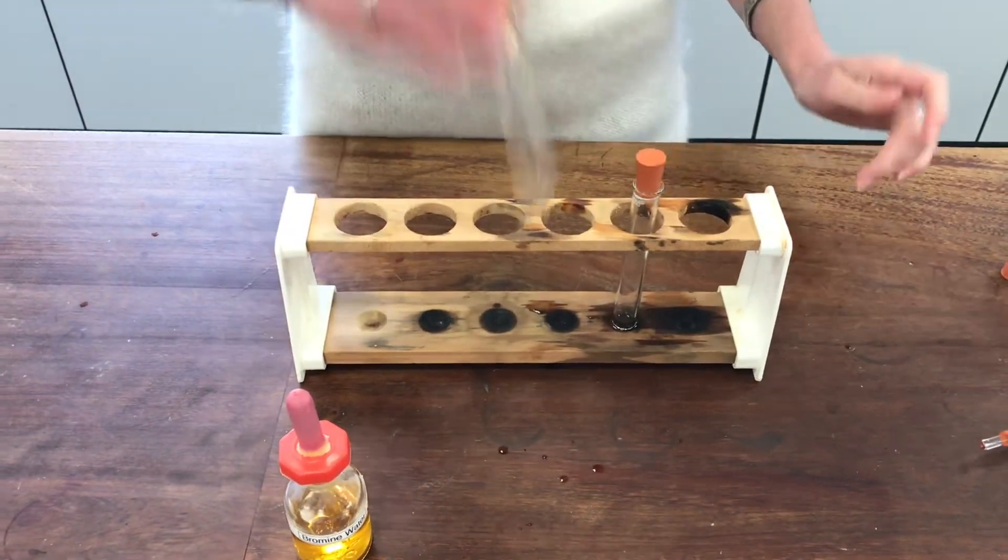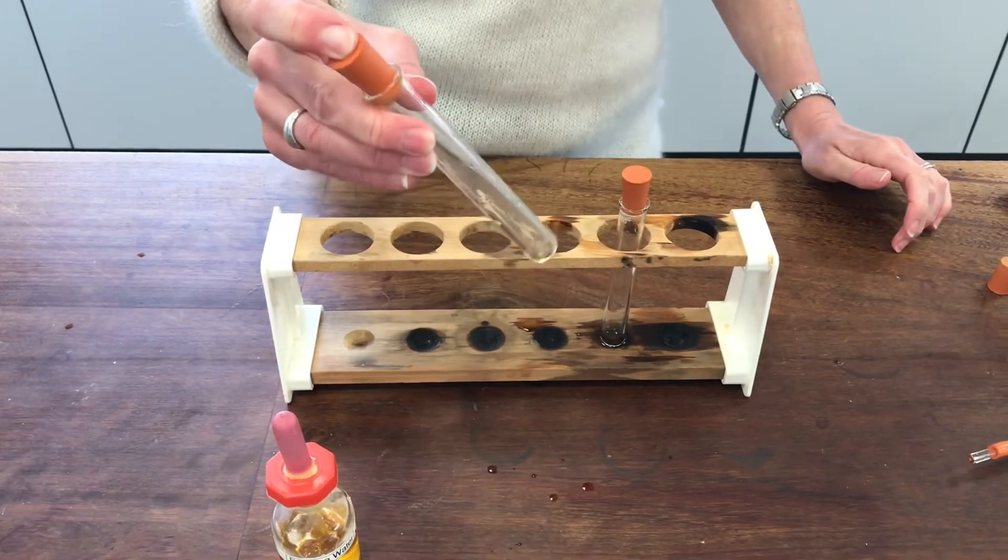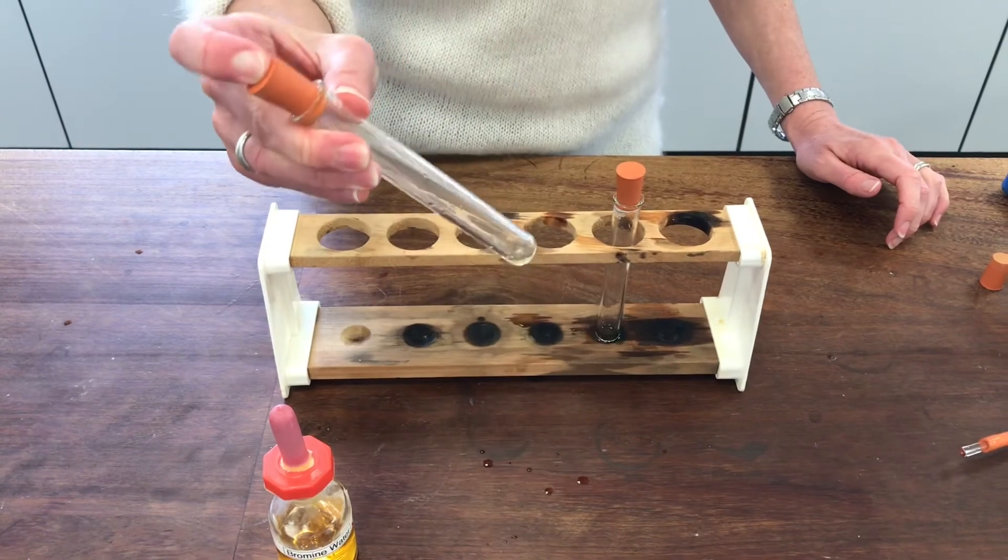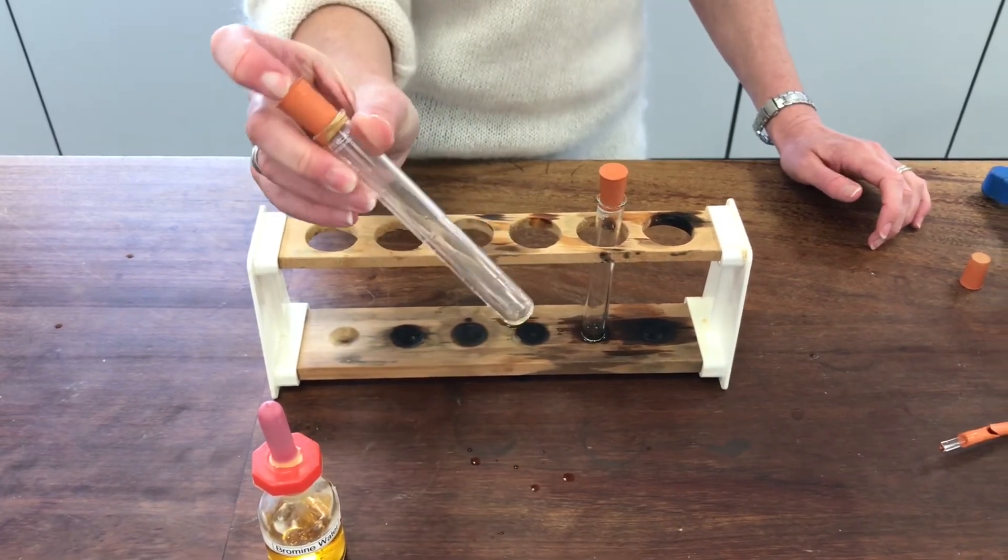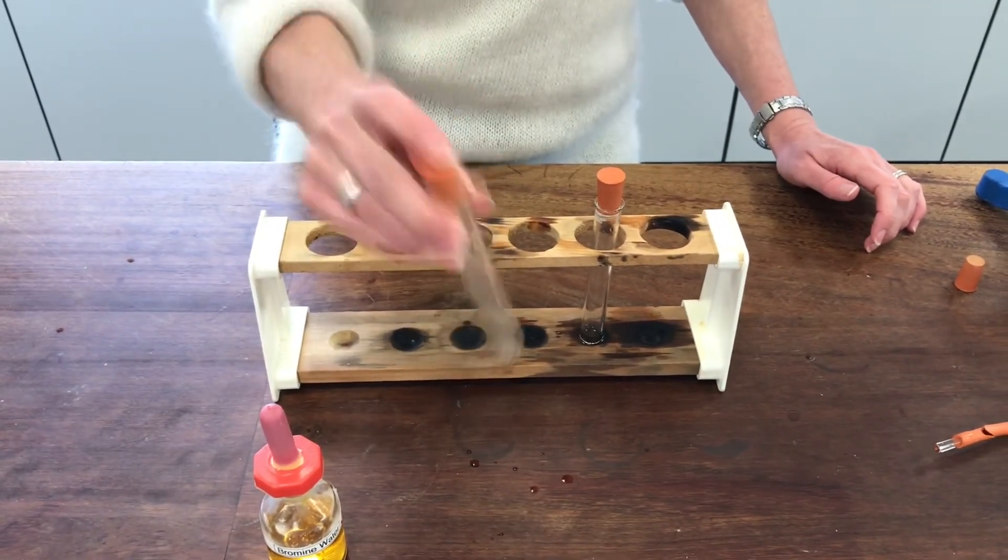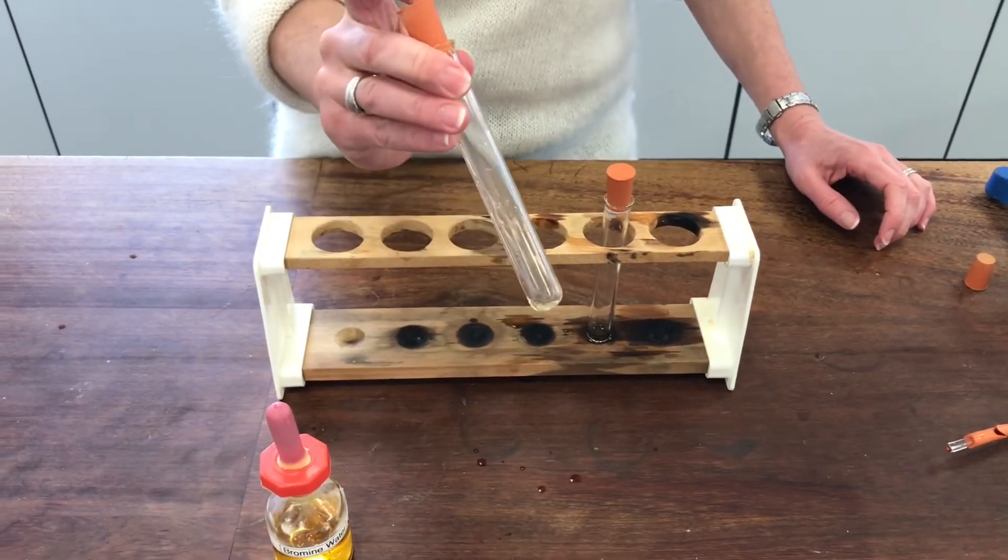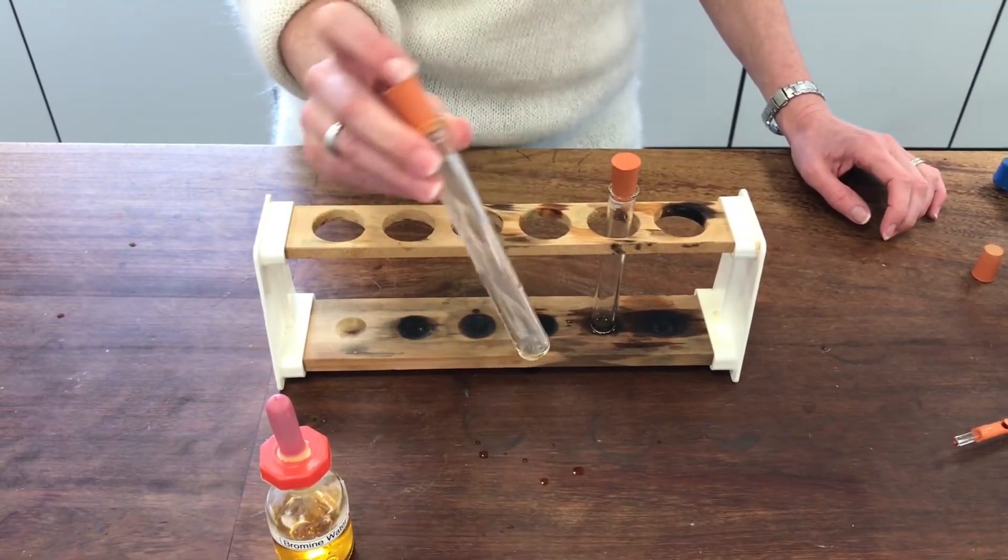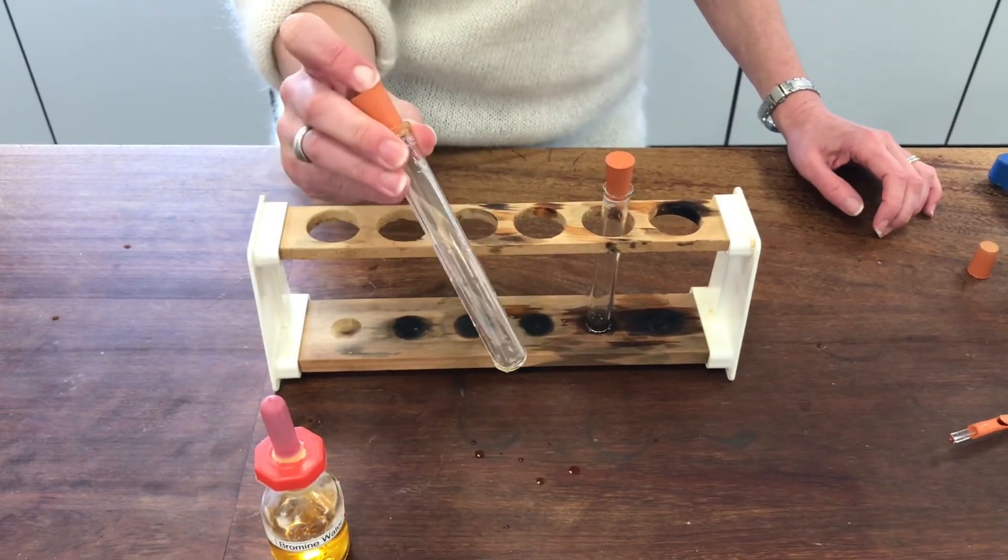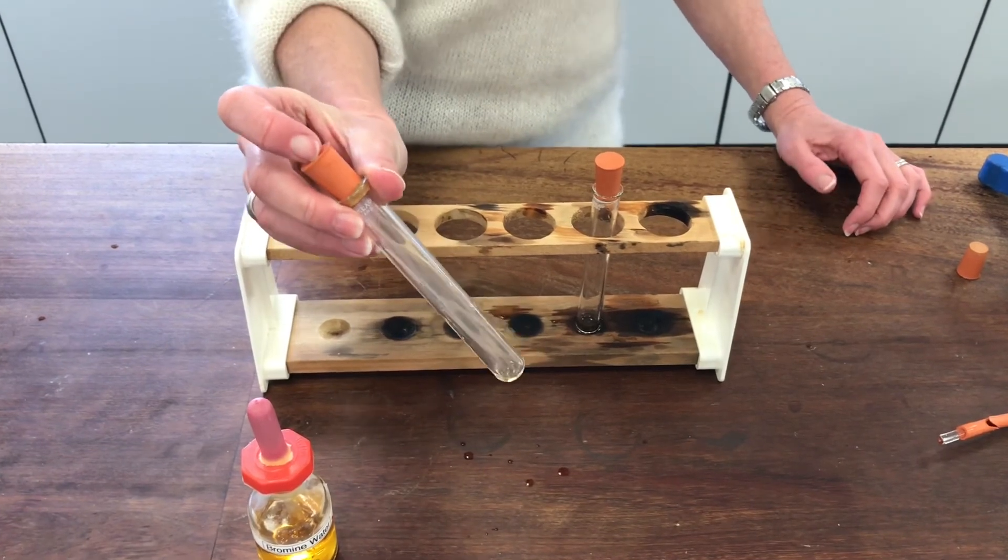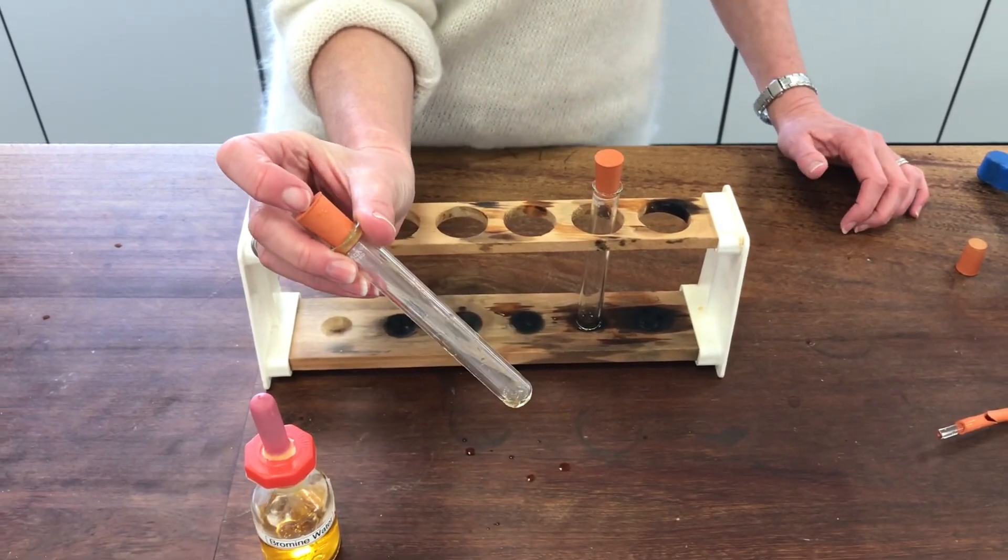Give it a shake up and I think that's quite convincing. There's still a teeny little bit of yellow there, but I was quite heavy-handed with the bromine water. Definitely it's decolorized considerably, so I think that's quite conclusive evidence about what kind of molecule I've collected as a product of this reaction.